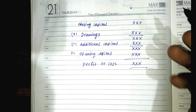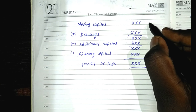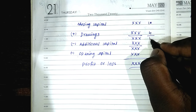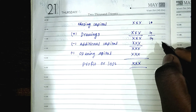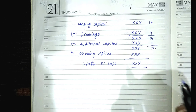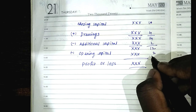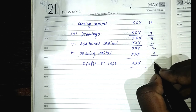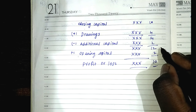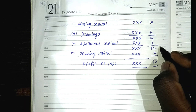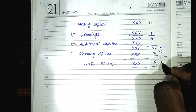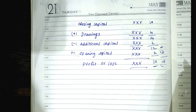For example, closing capital is 10, drawings are 4, so that gives 14. Additional capital is 12, opening capital is 2, so that gives 10 — that is profit. If the result is minus 10, that is a loss.